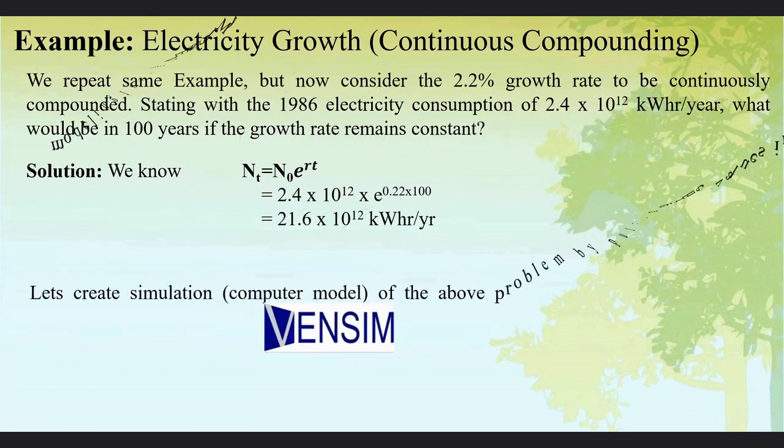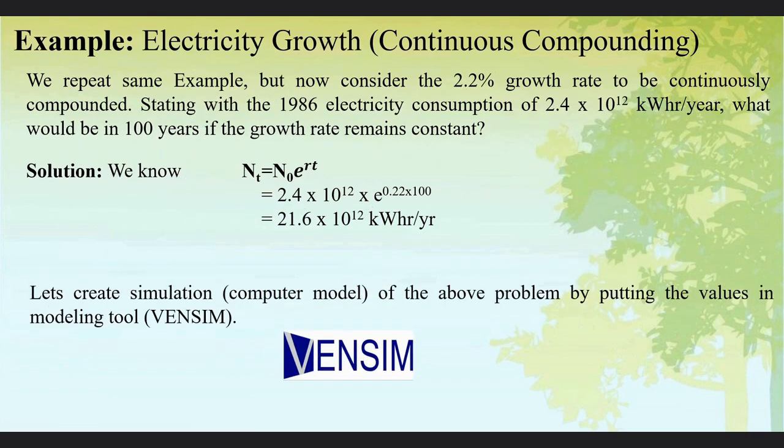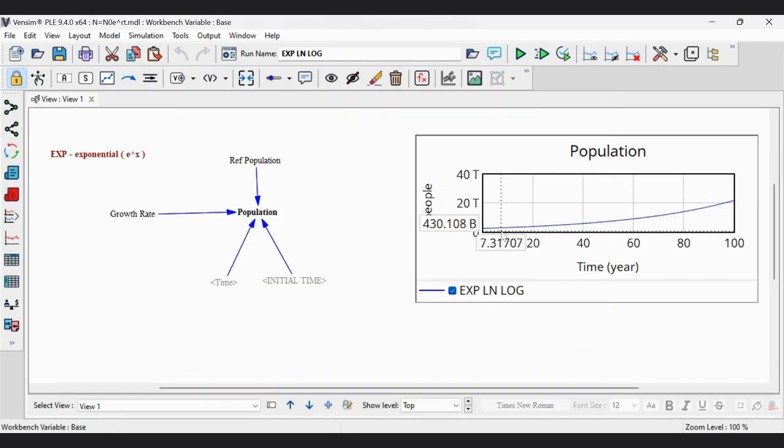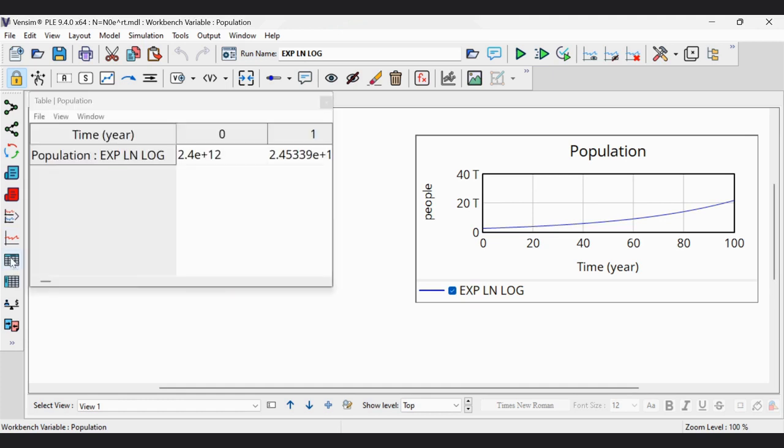If we put this equation and use simulation in Vensim, what will the graph look like? Here you can see, this is our graph and this is the model. You can see the initial population was 2.4 x 10^12, and at the end of 100 years it will be 2.16, that is 21.6 x 10^12.